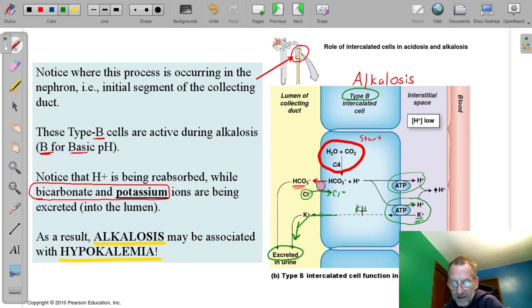Okay. So make up a cell. Try to get the basic movement of the ions. With alkalosis, what do you want to do? You want to get rid of the buffer and retain hydrogens. You need to lower the pH. You need to raise the hydrogen ion concentration.